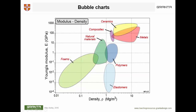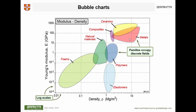Here's a different sort of chart where two properties are plotted — in this instance, Young's Modulus and Density. Both properties span a considerable range, so the scales are logarithmic. The obvious thing about it is that the different families of materials occupy discrete areas of this picture. Metals are up here with moduli between 10 and about 800 GPa. Technical ceramics are up here. Polymers are down here. Elastomers are down here. Foams are over here.